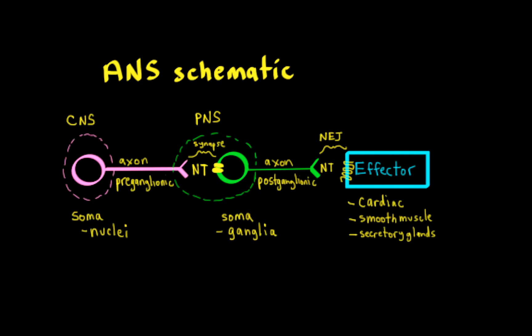So let's turn our attention to a schematic of the autonomic nervous system anatomy, and we're going to focus on two important neurons we find in the autonomic nervous system.